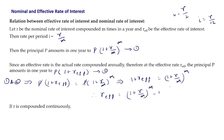Therefore R_effective = (1 + R/m)^m − 1. And if the nominal rate of interest is compounded continuously, applying limits gives the effective rate of interest as R_effective = e^R − 1. These are the formulae to remember for nominal and effective rate of interest.